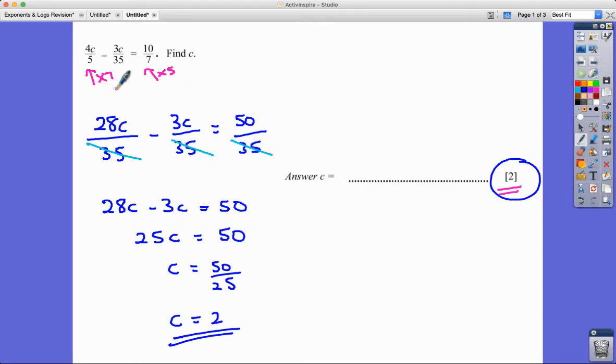But yeah, my class, their first instinct was to do cross multiplication. You can do it that way, but you do end up with some big numbers and that's the simplest way to do it.